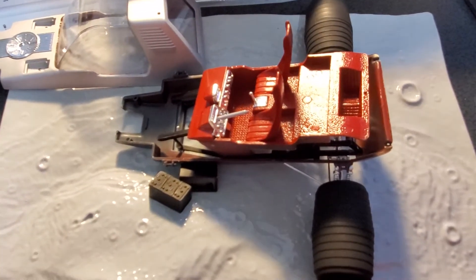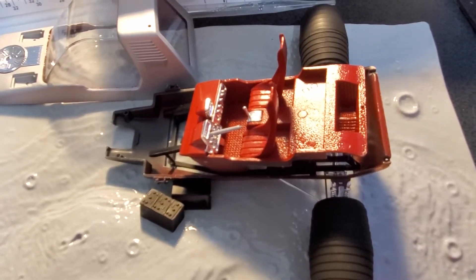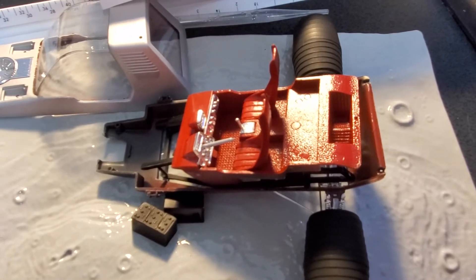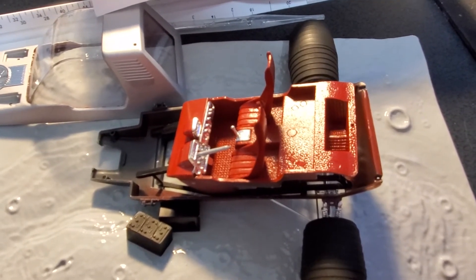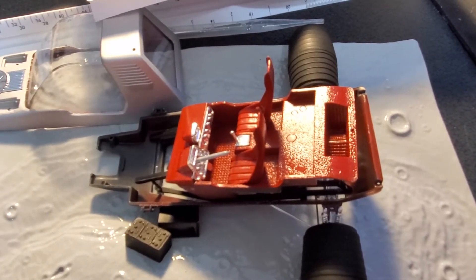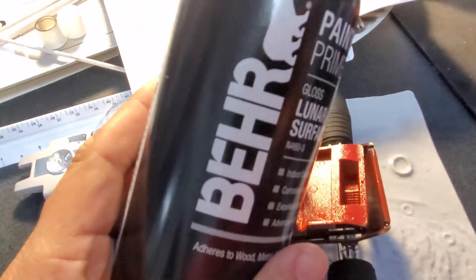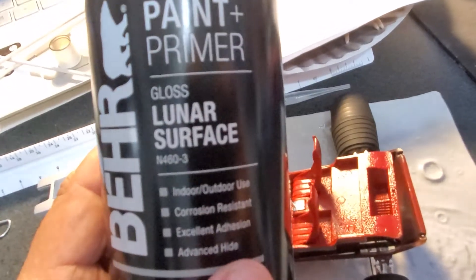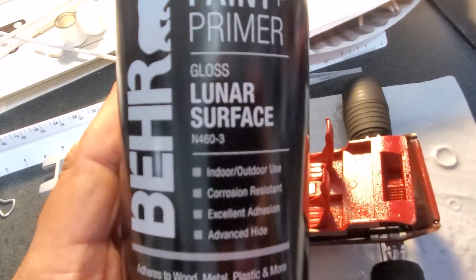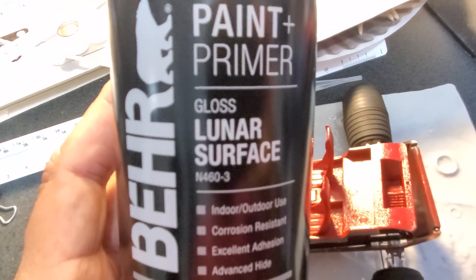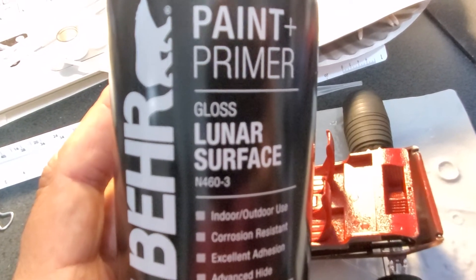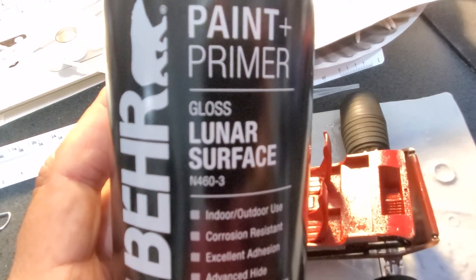And oh, and before I go, one last final part - I was in Home Depot the other day, just walking down the aisle, did not even go into the paint section, but on the end cap my eyes just glanced over and lo and behold, what did I see? I saw this Behr paint and primer and it said 'gloss lunar surface.' I was like, gloss lunar surface, really? So I bought it, and that is the color of the base right now.